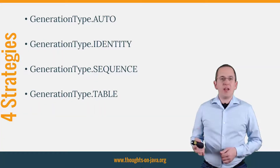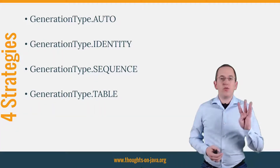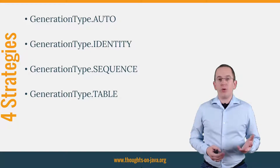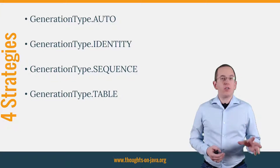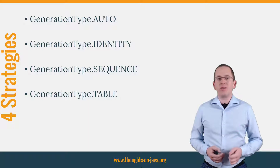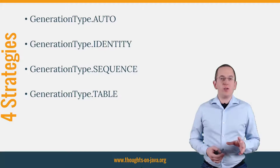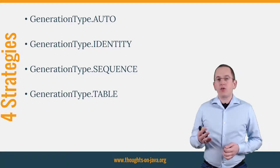The JPA specification supports 4 different primary key generation strategies, which generate the primary key values programmatically or use database features like auto-incremented columns or sequences. The only thing you have to do is to add the GeneratedValue annotation to your primary key attribute and choose a generation strategy.